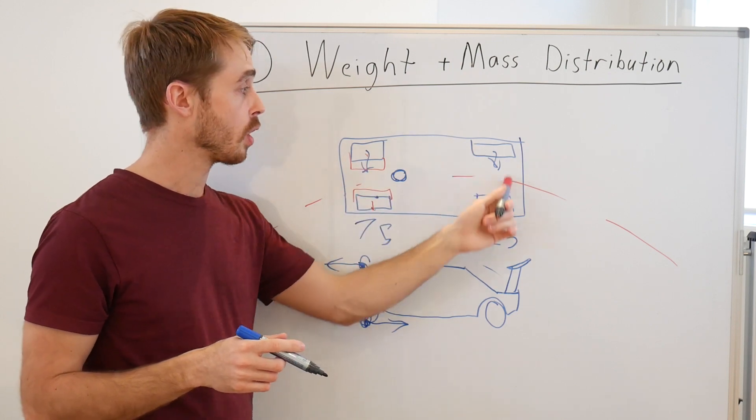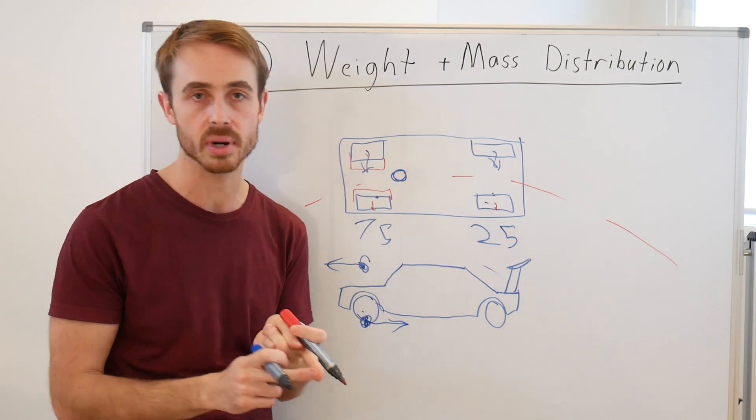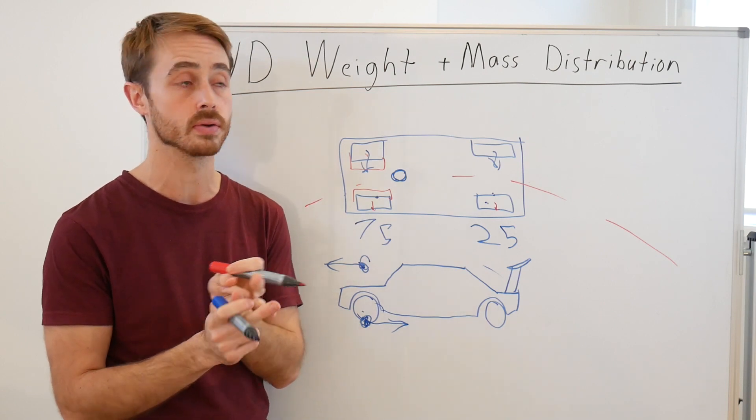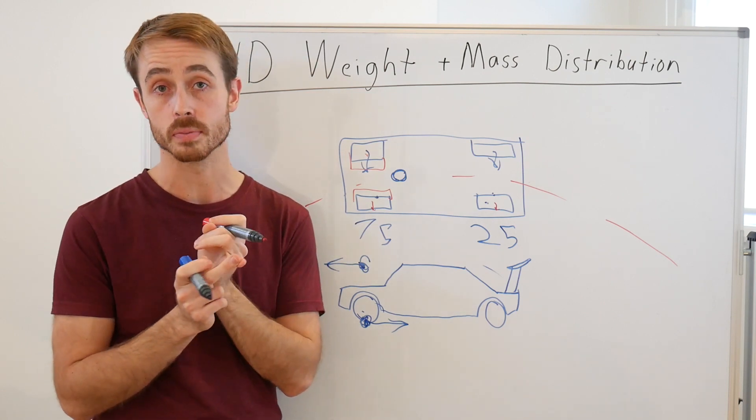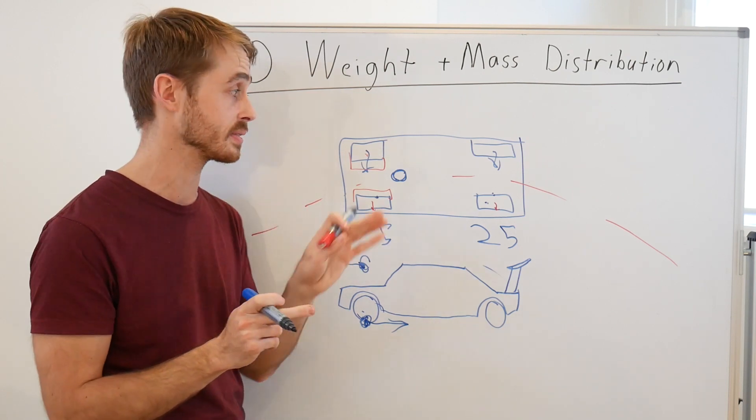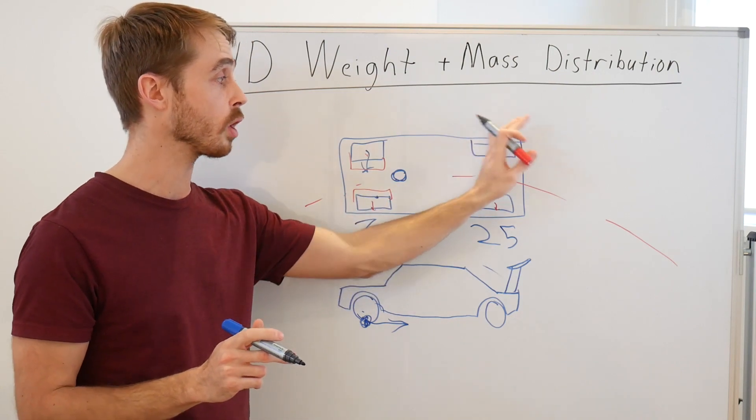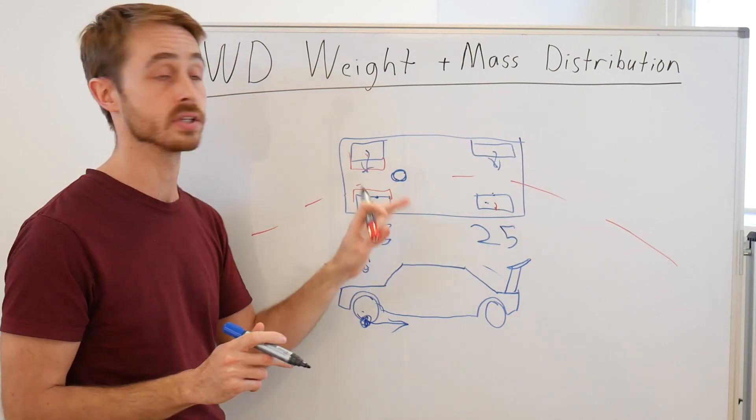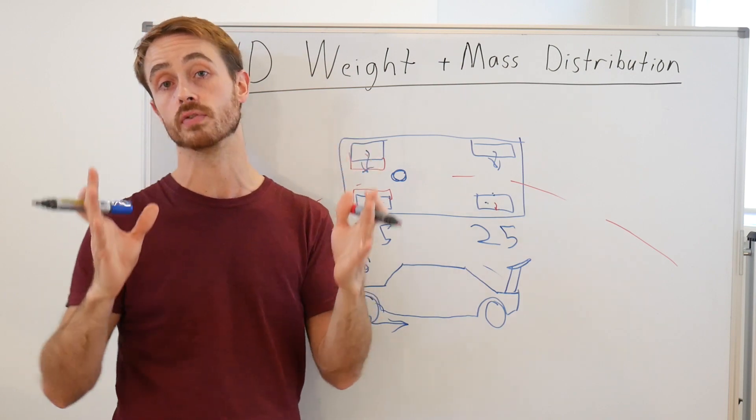Of course we can compensate for this by running a more similar tire all around and then basically rubbing grip off the rear to add to the front. Things like adding stiffer springs in the rear, stiffer anti-roll bars in the rear, playing around a little bit with pressures to change the contact patch sizes, stuff like that can actually rub grip from the rear and give it to the front.